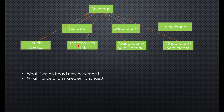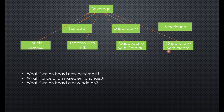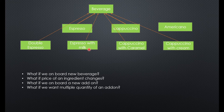The combination explodes to the number of drinks multiplied by the number of ingredients, which is a very bad design. Adding a new add-on like mocha means creating espresso with mocha, cappuccino with mocha, americano with mocha, and worse — espresso with milk and mocha, or double mocha. Supporting multiple quantities of the same add-on makes this a complete disaster, creating an enormous number of classes.